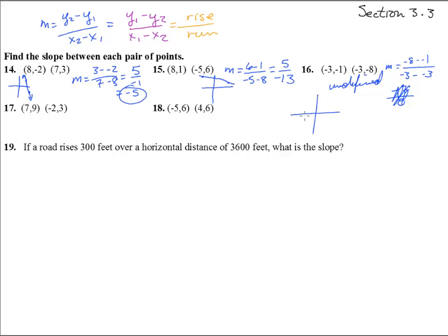Negative 3, negative 1. Negative 3, negative 8. Oh yeah, look at that, right there. He's straight up and down. That's an undefined slope.